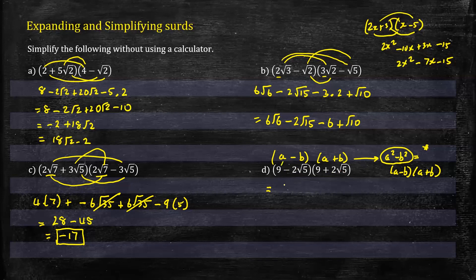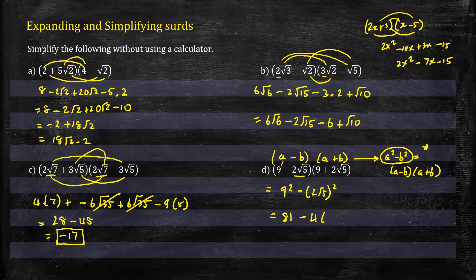Here a is 9 and b is 2√5. So (9 - 2√5)(9 + 2√5) = 9 squared minus (2√5) squared. Take note: 9 squared is 81, 2 squared is 4, and √5 squared is 5, so (2√5) squared = 20. Therefore 81 minus 20 = 61.